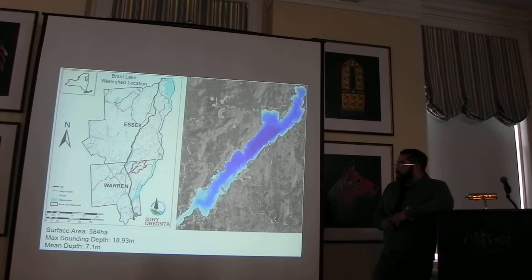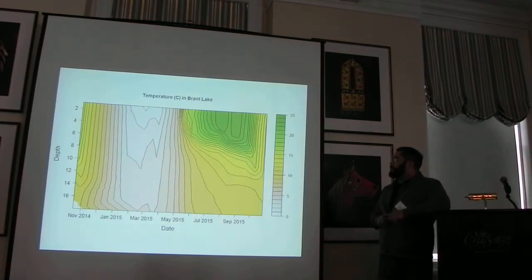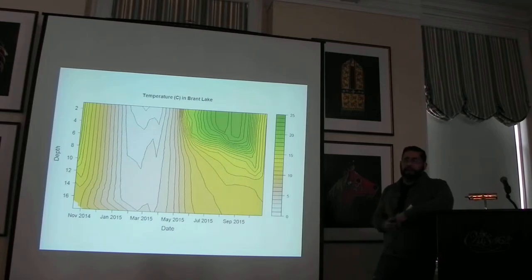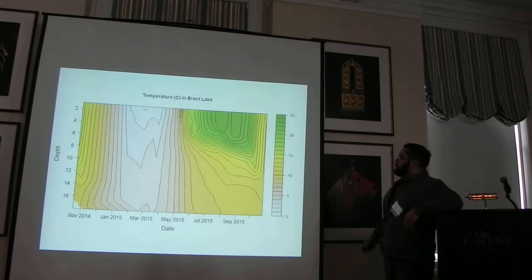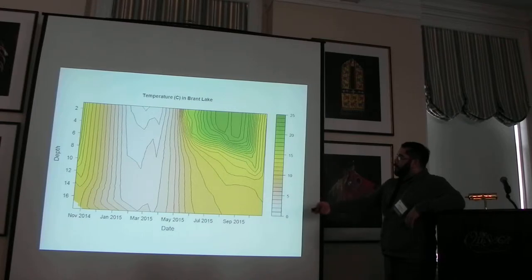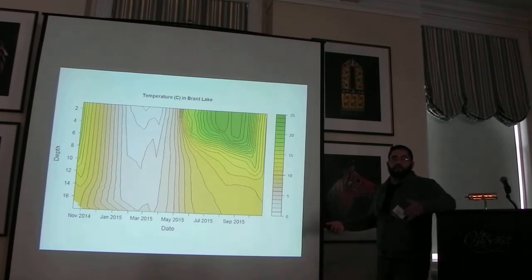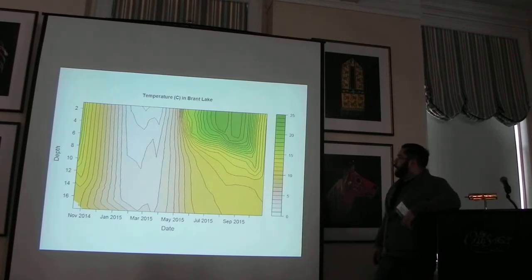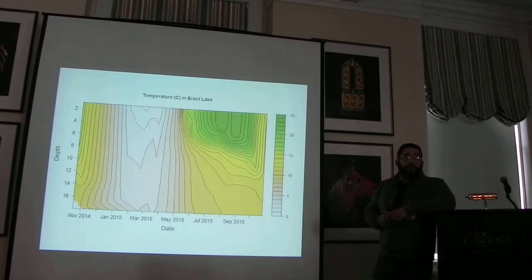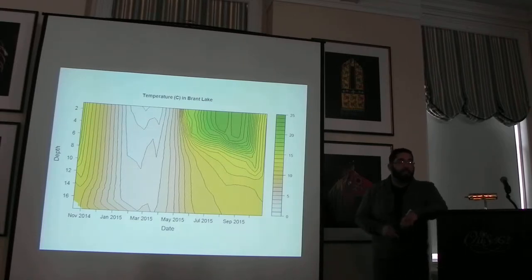It has a maximum sounding depth of 18.9 meters and a mean depth of 7.1. This is an isopleth graph from my whole dataset, from November 2014 all the way up to my last open water season. It's a dynamic lake, so we have two mixing events — one during fall turnover and one during spring mixing, with inverse stratification during winter and traditional thermal stratification during summer. Stratification sets up around the end of May through the end of October, with the thermocline setting up around 6 to 8 meters.